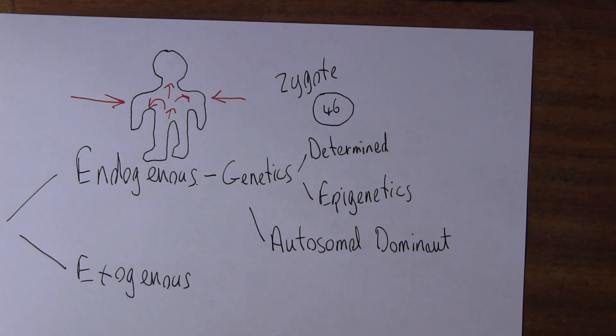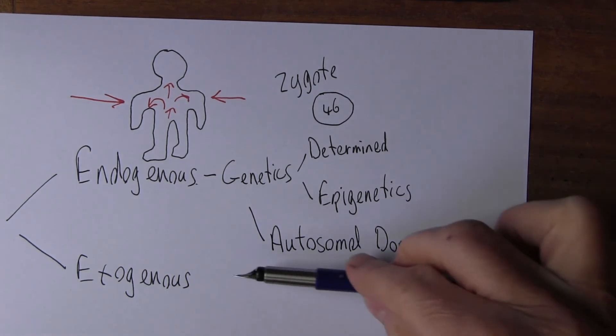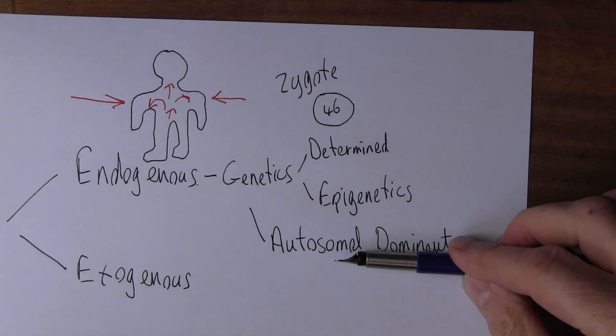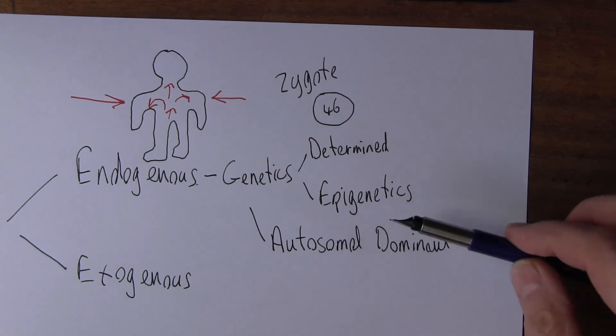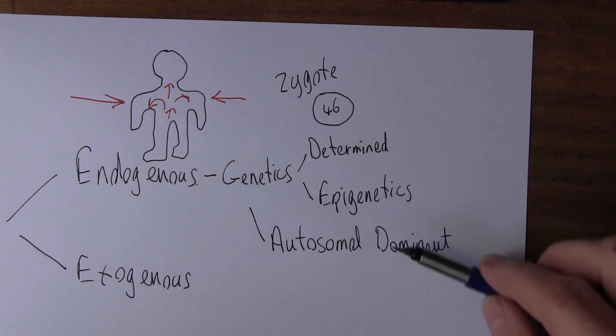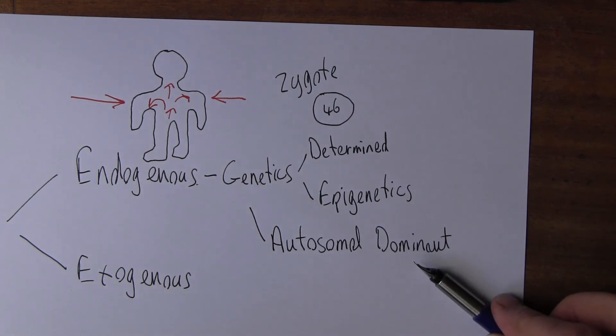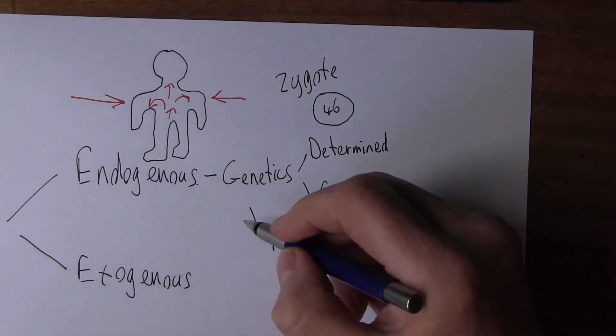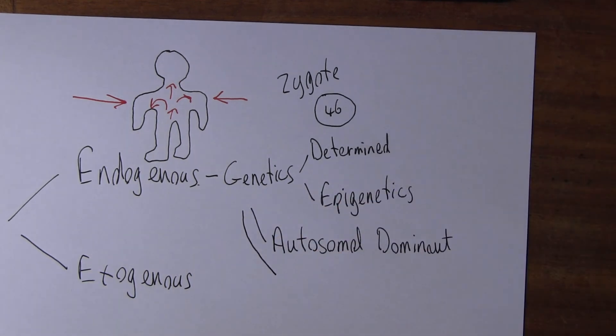An autosomal dominant condition - the autosomes are the non-sex chromosomes. We have 46 chromosomes, 44 of those are autosomes. A dominant condition is one which will be expressed if present. If one parent has the condition, typically there's a 50-50 chance that any children will have the same disorder or the same genetic trait.